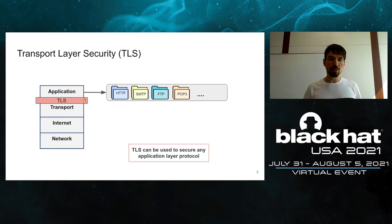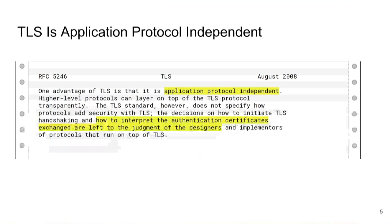TLS can be used to secure any protocol at the application layer. This is highlighted in the TLS 1.2 standard, which states that one advantage of TLS is that it is application protocol independent. Higher-layer protocols can layer on top of TLS transparently, and decisions on how to initiate the TLS handshake and interpret authentication certificates are left to the judgment of the designers.